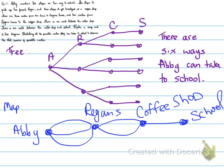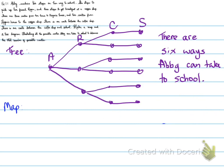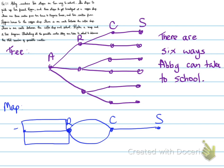The map doesn't necessarily have to look like one specific way. Another version was drawn that looks different. The idea is that we are drawing a map to cover all the bases. Abby takes three ways to get to Reagan, two ways to the coffee shop, one way to school.